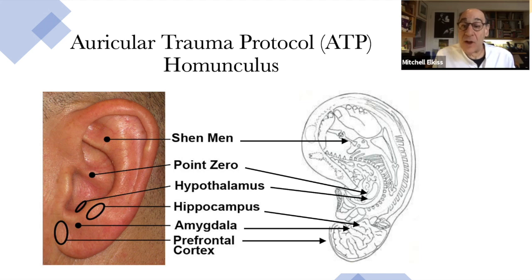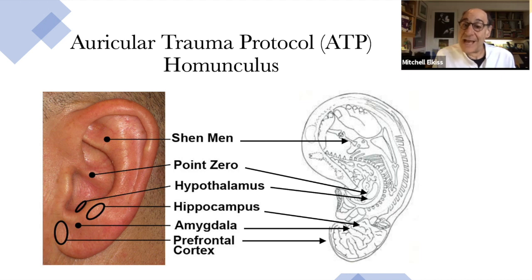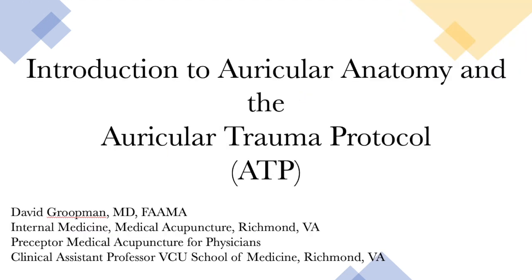The points specifically represent hypothalamus, amygdala, hippocampus, master cerebral or prefrontal cortex, shenmen or sympathetic nervous system, and point zero — the center of the ear. This is the auricular trauma protocol, or ATP.